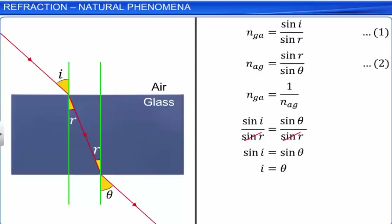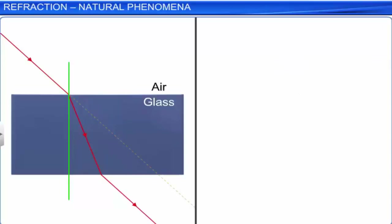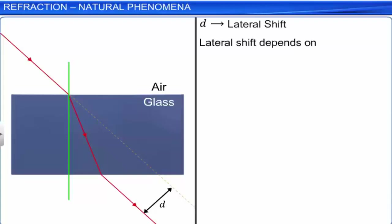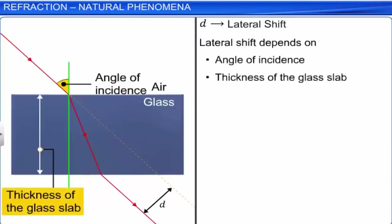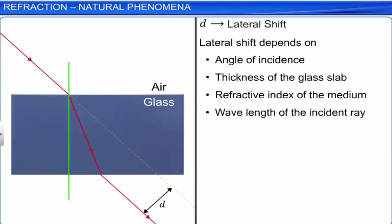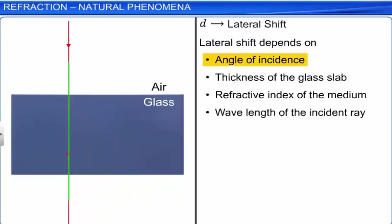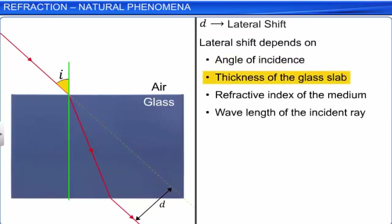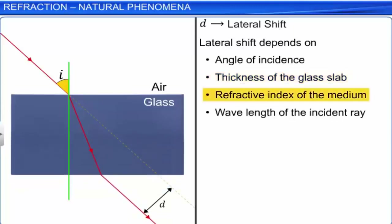However, the light ray has displaced laterally from its original path. The perpendicular distance between the incident ray and the emergent ray is known as lateral shift. The lateral shift depends on the angle of incidence, the thickness of the glass slab, the refractive index of the medium, and the wavelength of the incident ray. Lateral shift increases with an increase in angle of incidence, thickness of the glass slab, and refractive index. Since refractive index is inversely proportional to wavelength, lateral shift is also inversely proportional to the wavelength of the incident ray.